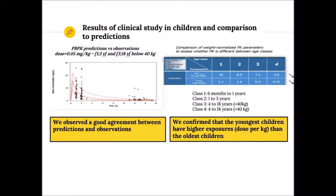Here are the results of the clinical study in children. On the graph, you can see the PBPK prediction in red and the observations in children. The agreement between prediction and observation was good. We also confirmed that the youngest children are more highly exposed when the dose is expressed per kilogram than the older children.